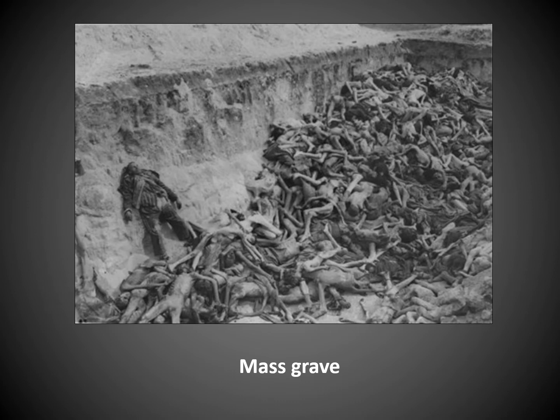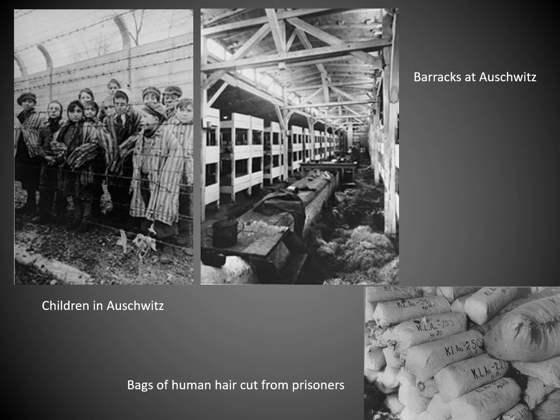This is a real picture of a mass grave of people that were shot. We see some children at Auschwitz and the barracks at Auschwitz — very dirty, very crowded, on top of each other. This is where a lot of disease would spread. Even if you survived a mass shooting, many people still died just from living in the barracks. The picture at the bottom shows bags of human hair cut from prisoners. Especially going into the gas chambers, they would shave their heads because it made it easier to deal with the dead bodies and how they would burn.